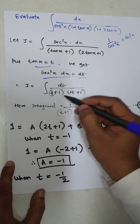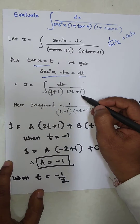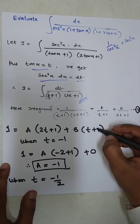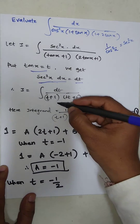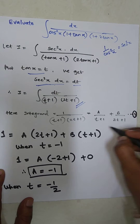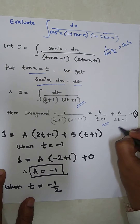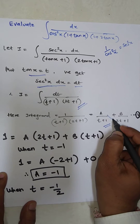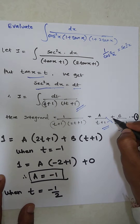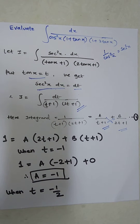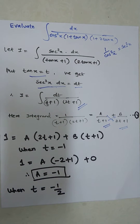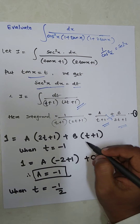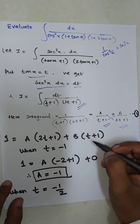Now we will use the partial fraction method: A upon the first bracket (t + 1) and B upon the second bracket (2t + 1). Cross-multiplying gives: 1 = A(2t + 1) + B(t + 1).